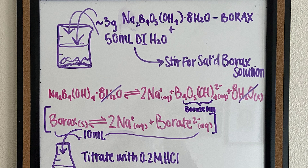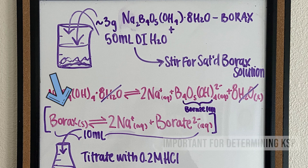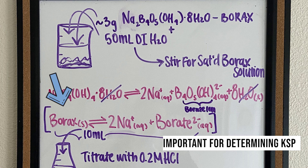A little breakdown of today's experiment: we will be making a saturated solution of borax in 50 milliliters of deionized water. We'll stir that for a bit and make sure we have some solid leftover, which will indicate our saturated solution. The equation shows that borax, also known as Na2B4O7·8H2O, is in equilibrium with two moles of sodium ions and one mole of borate ion. We can cross out the water molecules, leaving the key equilibrium: borax ⇌ 2 Na⁺ + 1 borate ion.